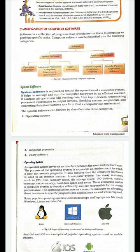The first point is system software. According to its name, system software is required to control the operations of a computer system. It is the software that is created to control all the operations of the computer system. It helps to manage and run the computer hardware in an efficient manner.